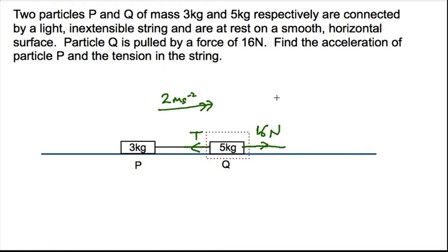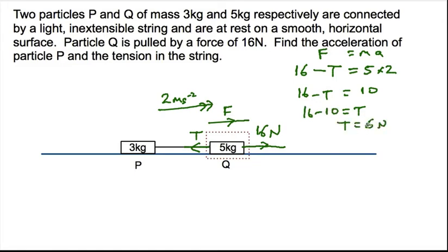So the acceleration of Q is 2 meters per second per second. What we don't know is what the resultant force is on Q. The resultant force, considering going right as being positive, must be 16 Newtons subtract T because 16 Newtons is pulling it that way and the T is pulling it that way. We also know the resultant force equals the mass times acceleration because F equals MA, and the mass we know is 5 and the acceleration is 2. So I know that 16 subtract T equals 10 Newtons. Rearrange that, I'll get T equals 16 subtract 10. So T equals 6 Newtons. So the tension in the string is 6 Newtons.